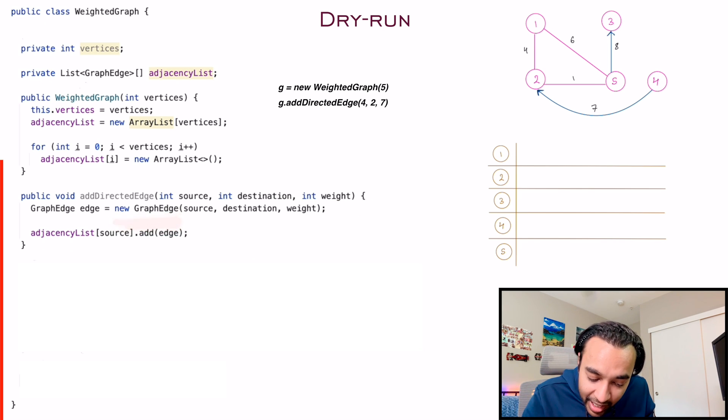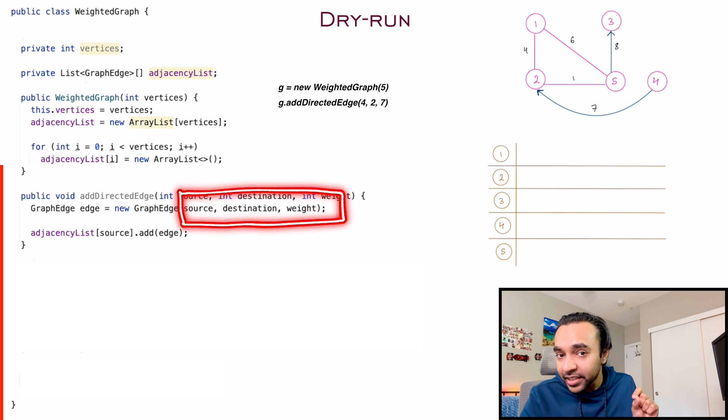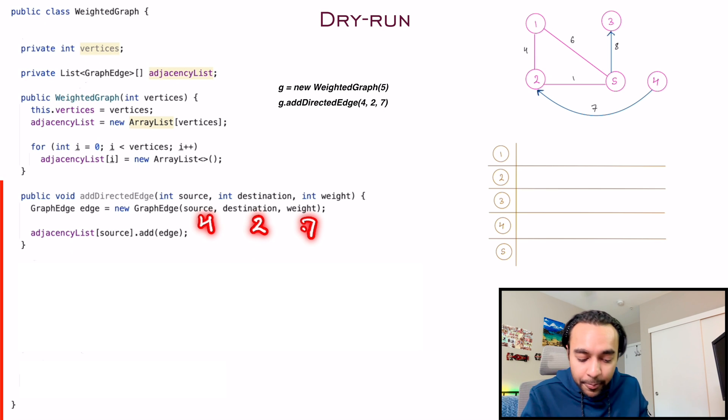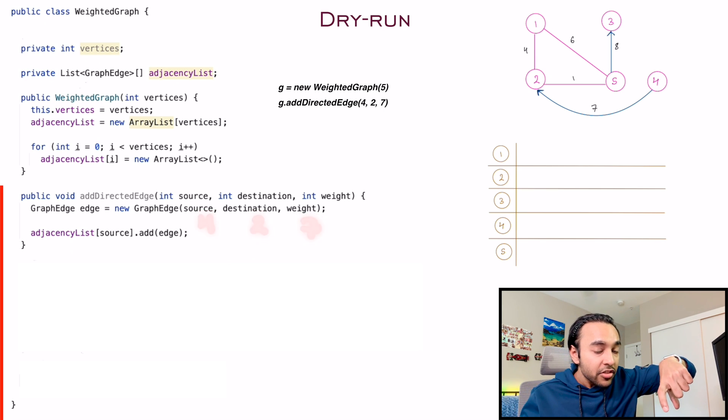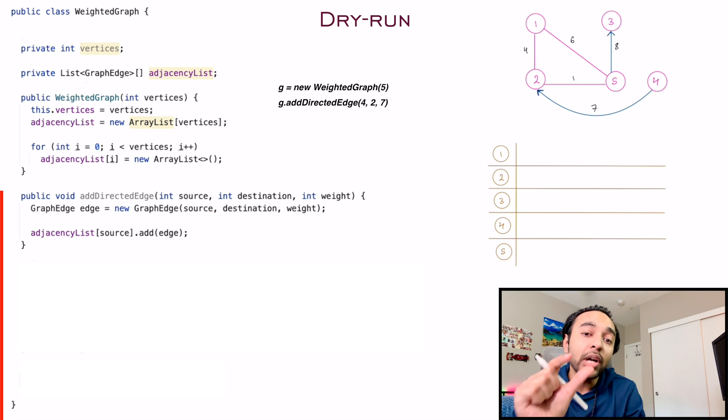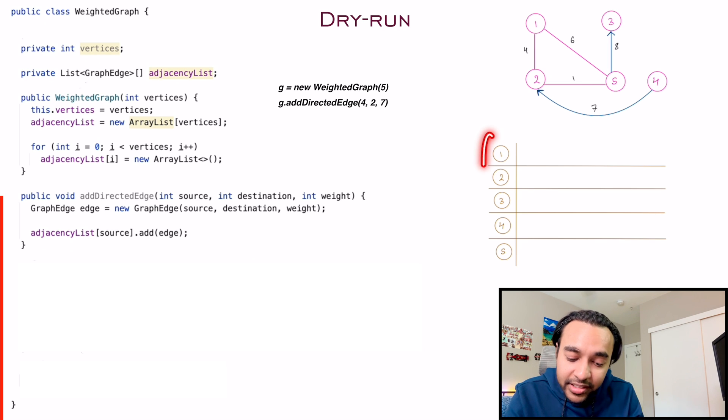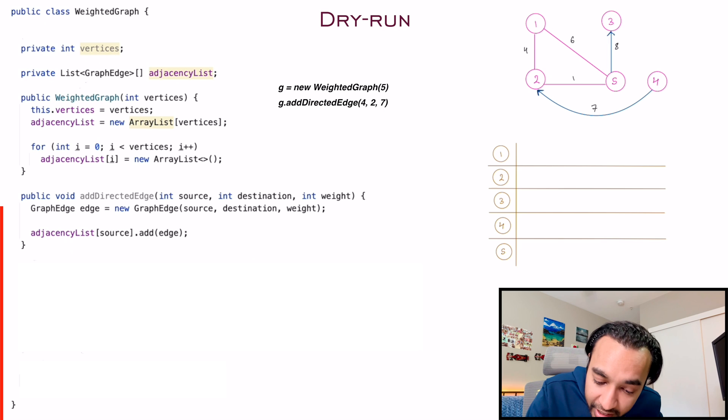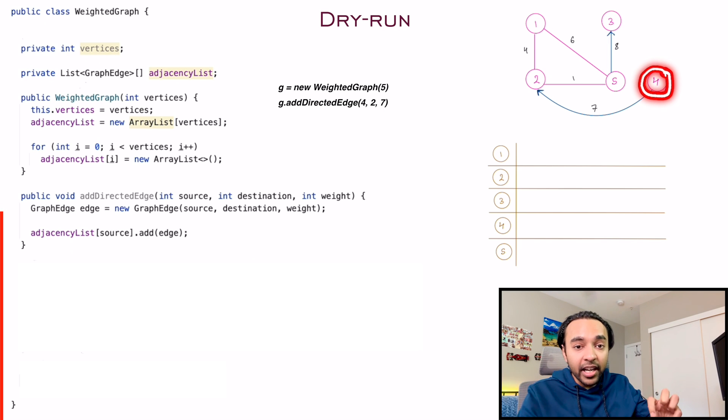So you passed in source as four, destination as two, and the weight as seven. So this will now create an edge. But you have to add this edge in your adjacency list. And where do you add it? You will add it in node number four, because this is where it is getting directed from.